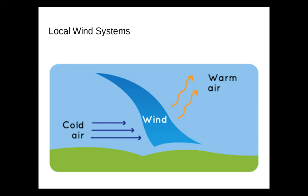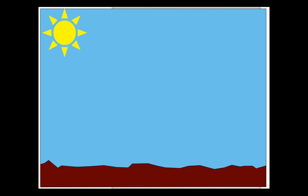Typically, these local wind systems are caused by unequal surface heating. In the illustration, initially the pressure is the same across the landscape. What is the wind like? Well, it would be calm — there would be very little wind, if any.